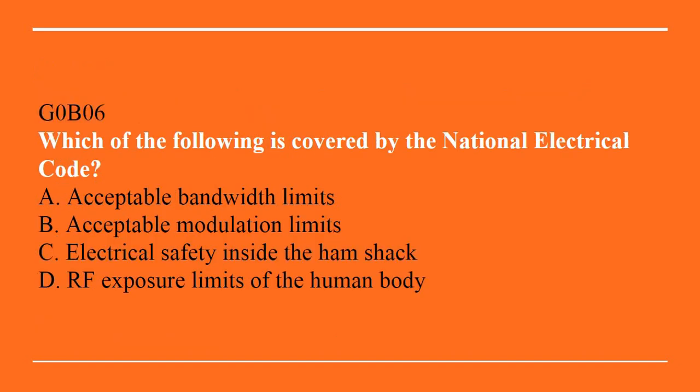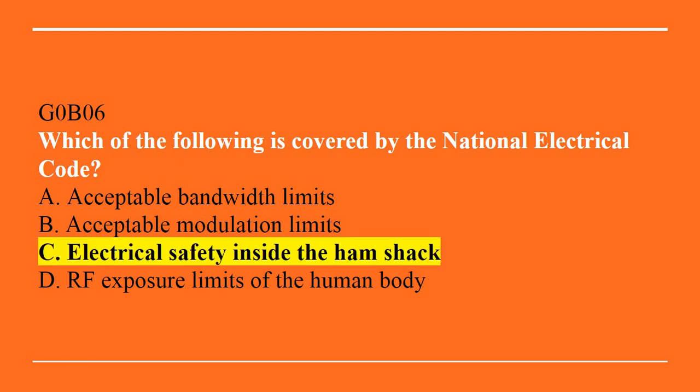G0B06: Which of the following is covered by the National Electrical Code? A, acceptable bandwidth limits. B, acceptable modulation limits. C, electrical safety inside the ham shack. Or D, RF exposure limits of the body? Correct answer is C — electrical safety inside the ham shack.